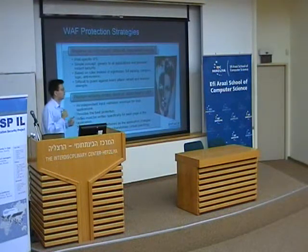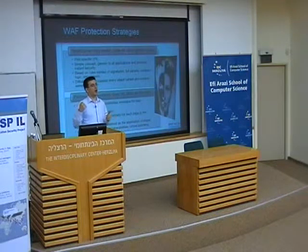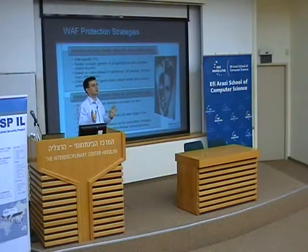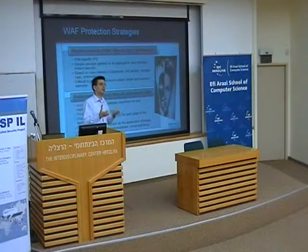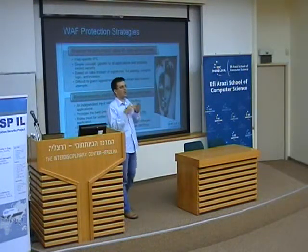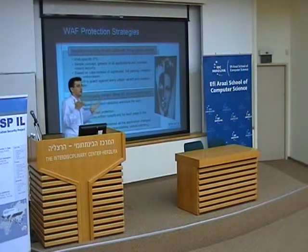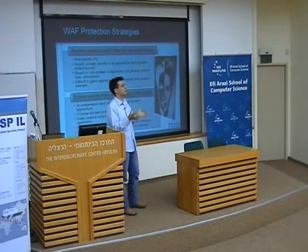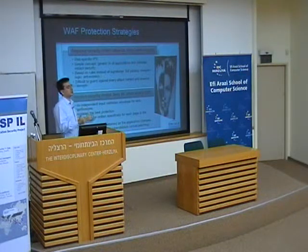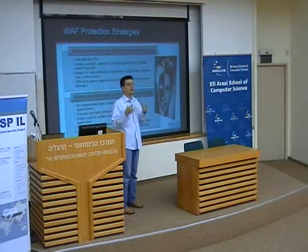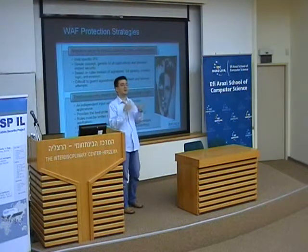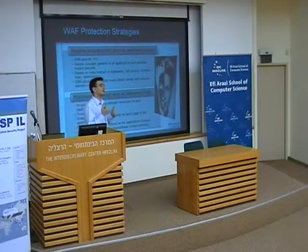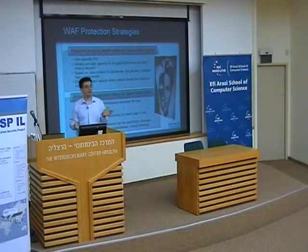The alternative is to use the positive security model, where you do something completely opposite. You don't really care what all the bad stuff is out there. You just look at your application and want to know what's right. So if you have an application with a parameter that's a number, in a positive security model you only care that what you received is a number. If it's not a number, you safely reject that transaction. The advantage of a positive security model is that you don't have to know anything about the attacks — you just focus on what's good, and as a consequence you will have rejected all attacks as well.